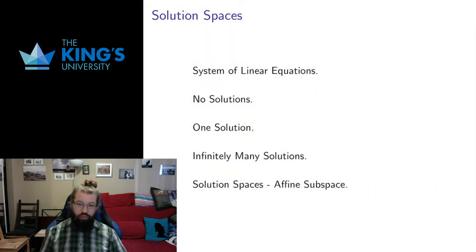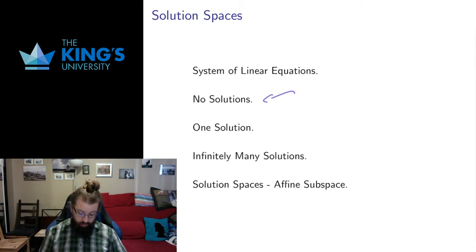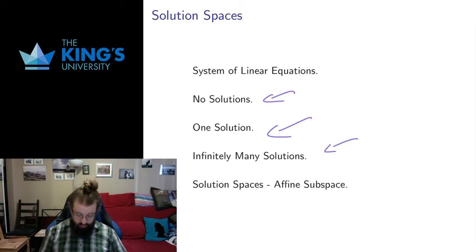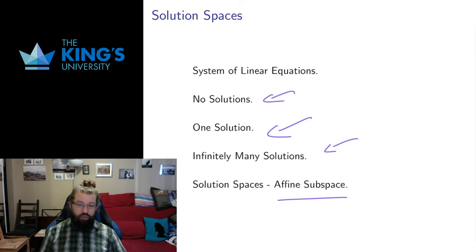Let me give you the general theory of what's going on here. When I have a system of linear equations I have three possibilities. Sometimes there is no solution. Sometimes there's exactly one solution — those are the matrices we knew how to interpret. But sometimes there are infinitely many solutions, and if there are infinitely many solutions they form an affine subspace. Those are the ones we really want to talk about because those are the situations where we come up with these strange matrices and we have to interpret them.